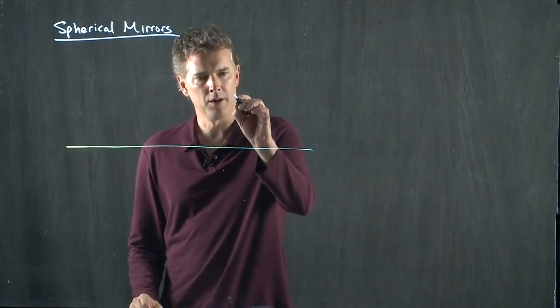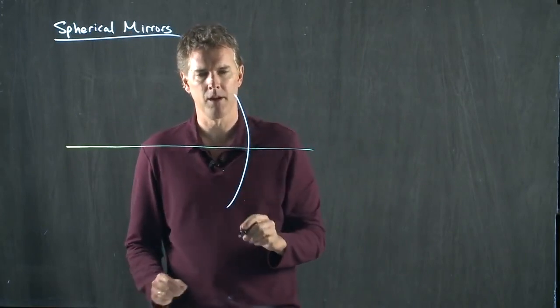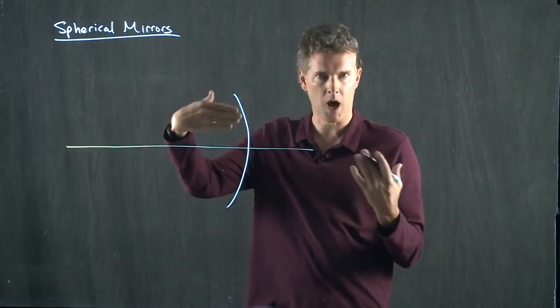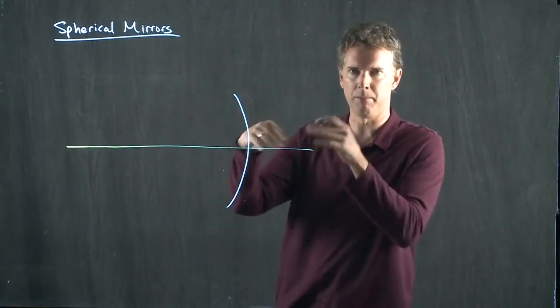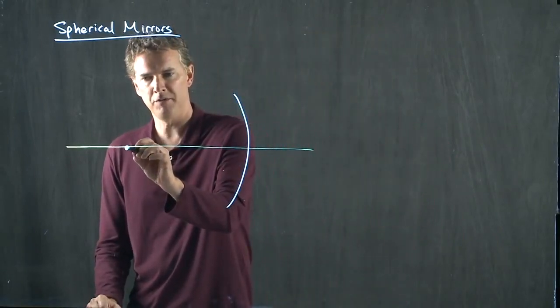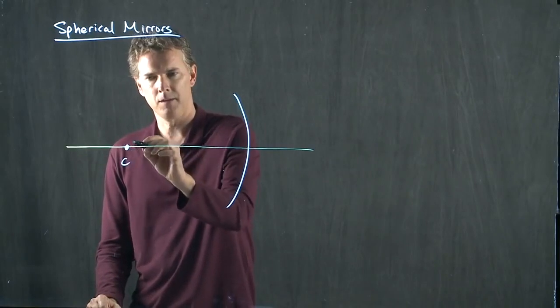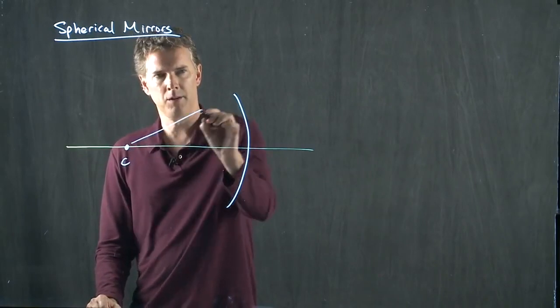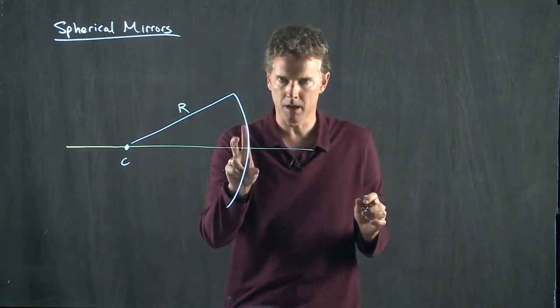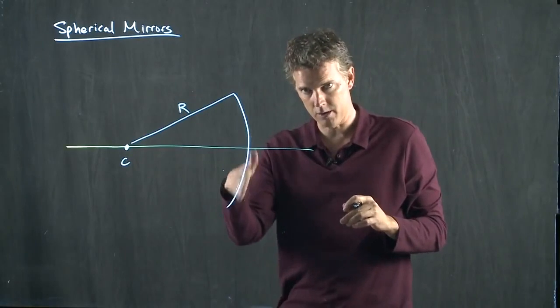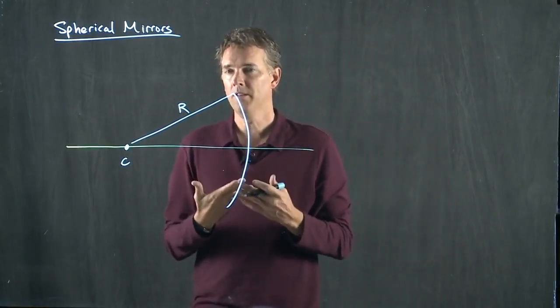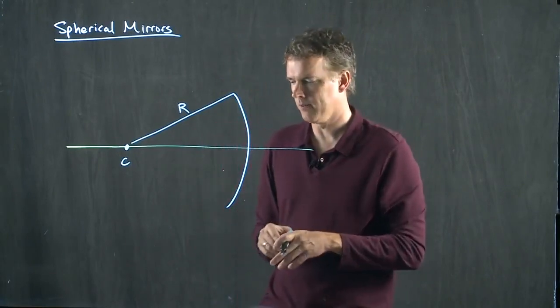So let's think about our spherical mirror. There it is. It was made from some sort of spherical object, right? You cut it out with a big mill or something like that. There is therefore some center to this thing. If I have this radius r and I sweep it out, I'm going to mimic this arc of this spherical mirror.